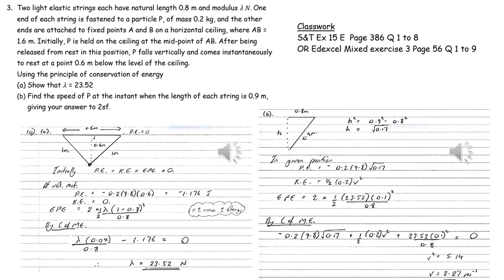In part B, we're once again going to use conservation of mechanical energy, comparing this given position to the original position when there was no energy in the system. We first need to work out the vertical height that the object has dropped, and we can do that using Pythagoras. We can then work out expressions for the kinetic energy, gravitational potential energy, and elastic potential energy, and equate these to the zero energy initially to work out the speed in the required position.